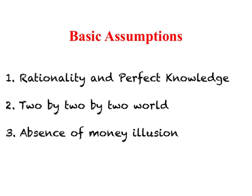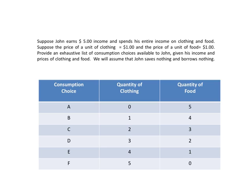In the last video, we looked at the case of one good where a person spends all his income on one good, and what absence of money illusion means in that case. Now we move on to a two-good case, simply because we are working through the two-by-two-by-two world, so we need to look at absence of money illusion when considering two goods.